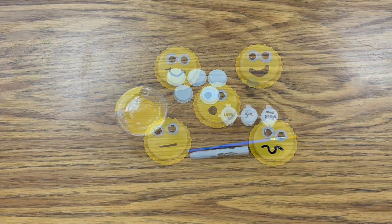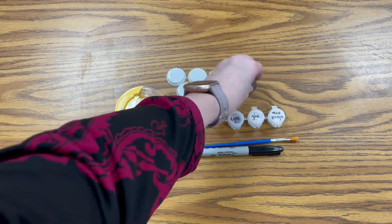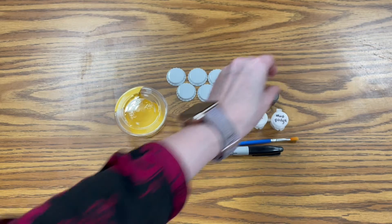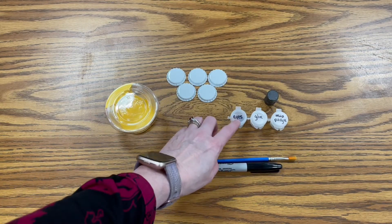For today's craft you're going to need your five bottle caps, your five magnets, your yellow paint, and then you should have your container of eyes.